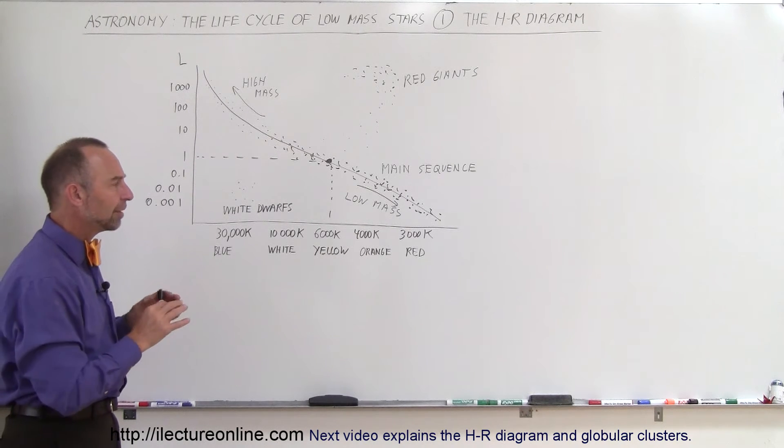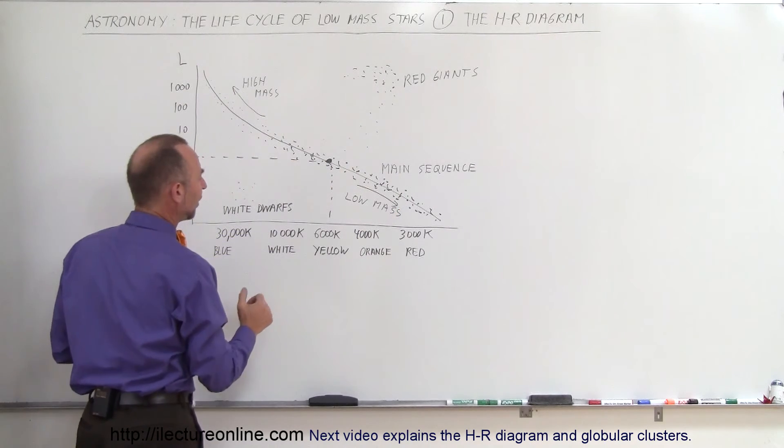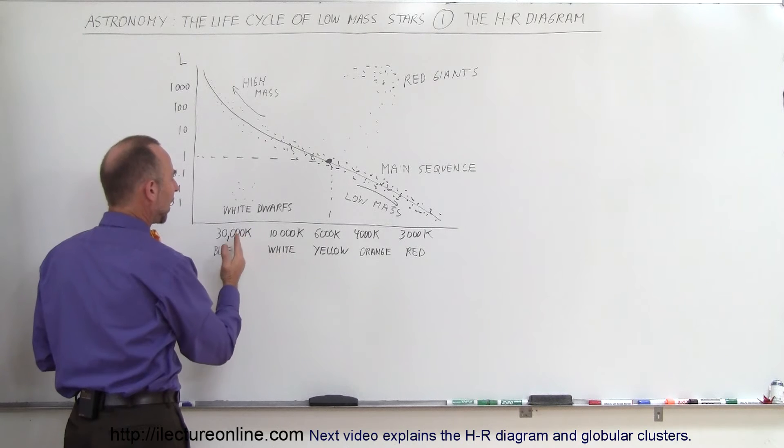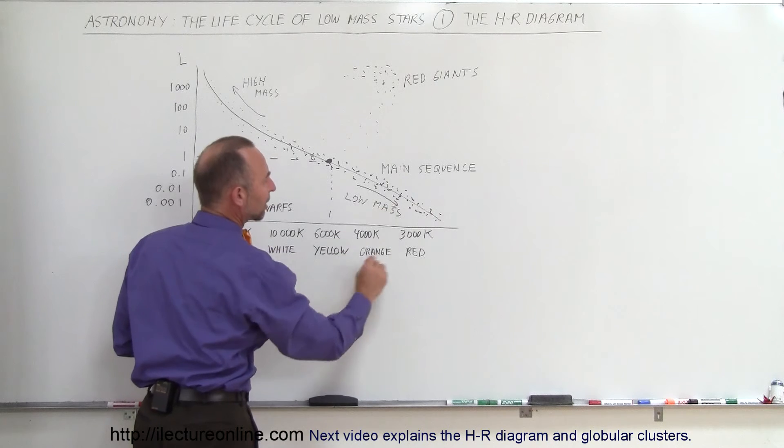So we understood, based upon the HR diagram, that the main sequence was where stars would spend most of their life, that bigger stars that are hotter would be up on this side of the main sequence, and smaller stars that are cooler would be on this side of the main sequence.